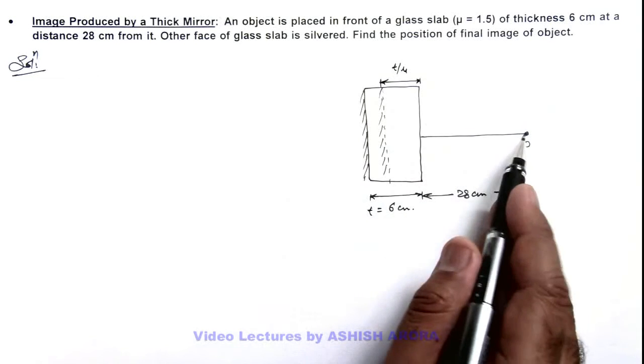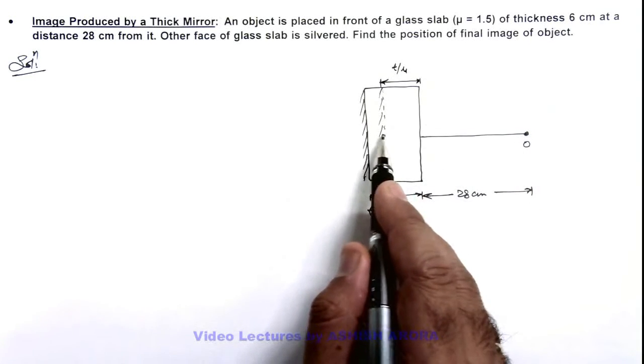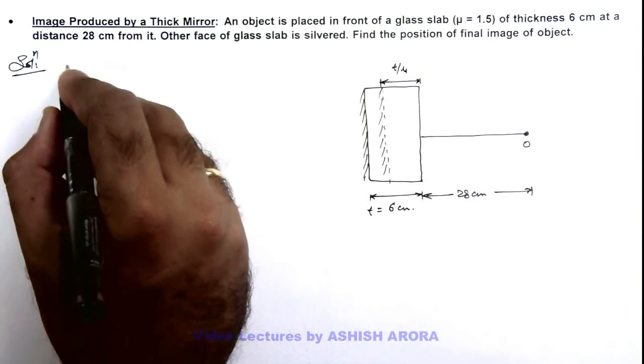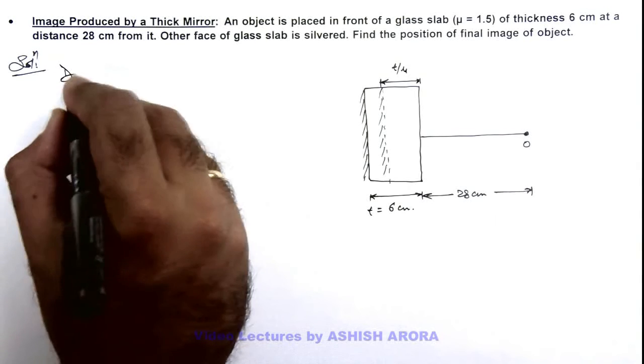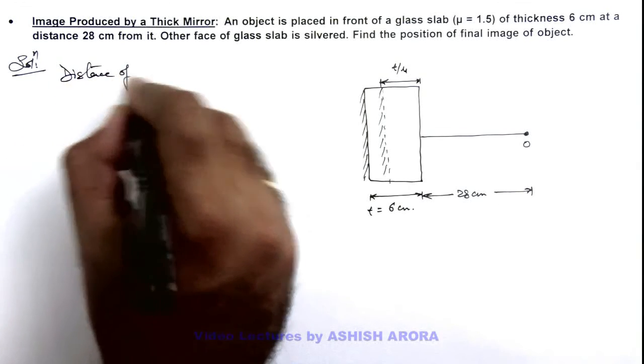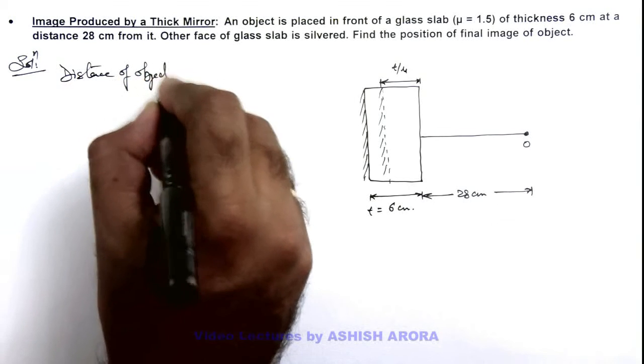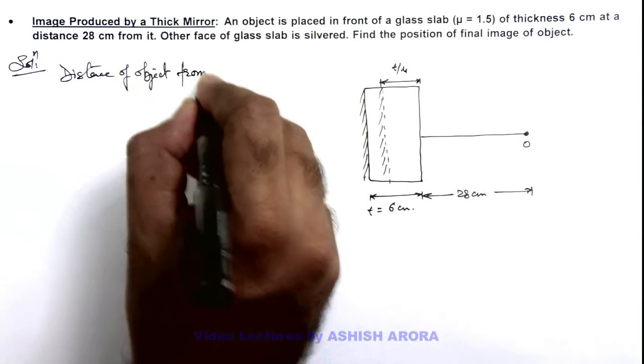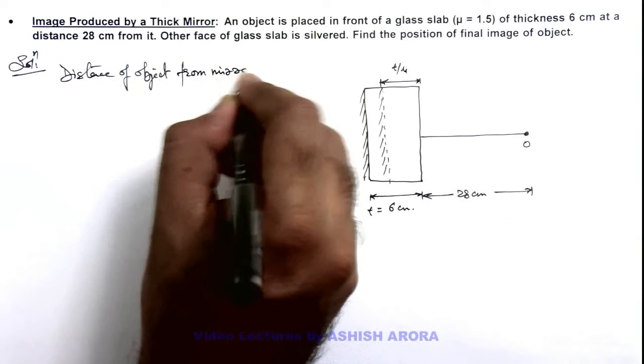If we just have a look at the distance of the object from the mirror, we can write: distance of object from mirror is...